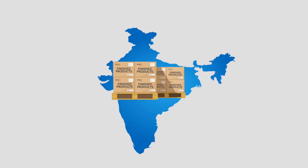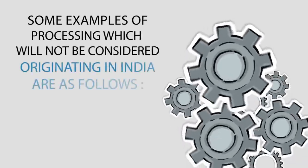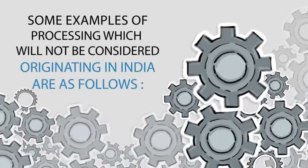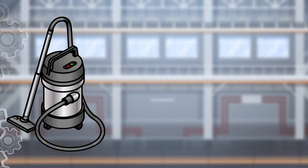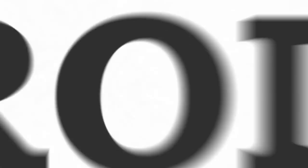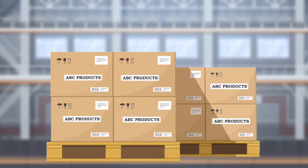Some examples of processing which will not be considered as originating in India are as follows: operations like removal of dust, sifting, sorting, matching, washing, painting, changes of packing and breaking up and assembly of consignments.